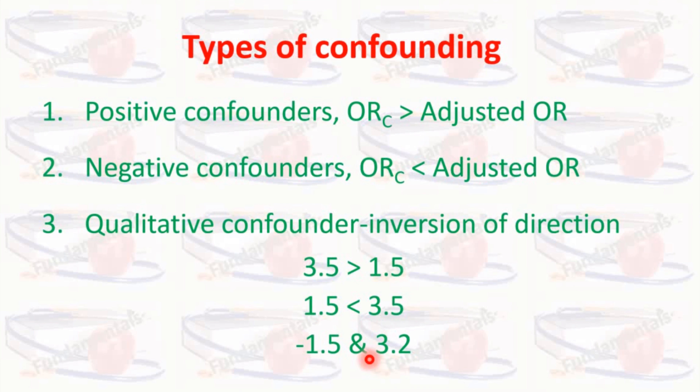These are the three types of confounders. This concludes the discussion about effect modifiers in epidemiological studies. Please subscribe to the channel and press the bell icon for further updates, and also like the video and share it with your colleagues and friends.